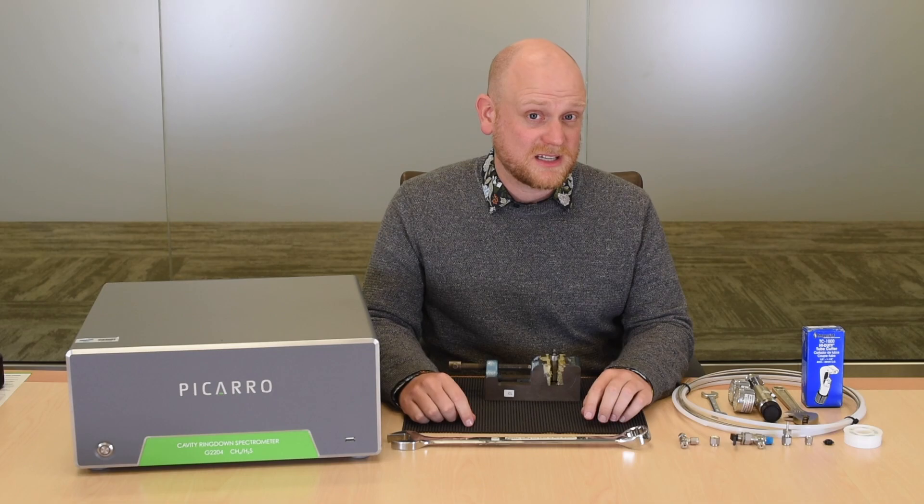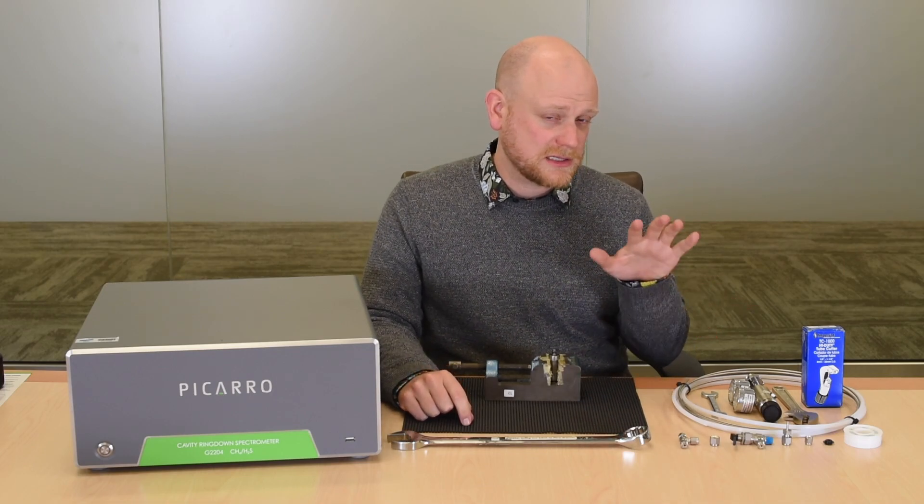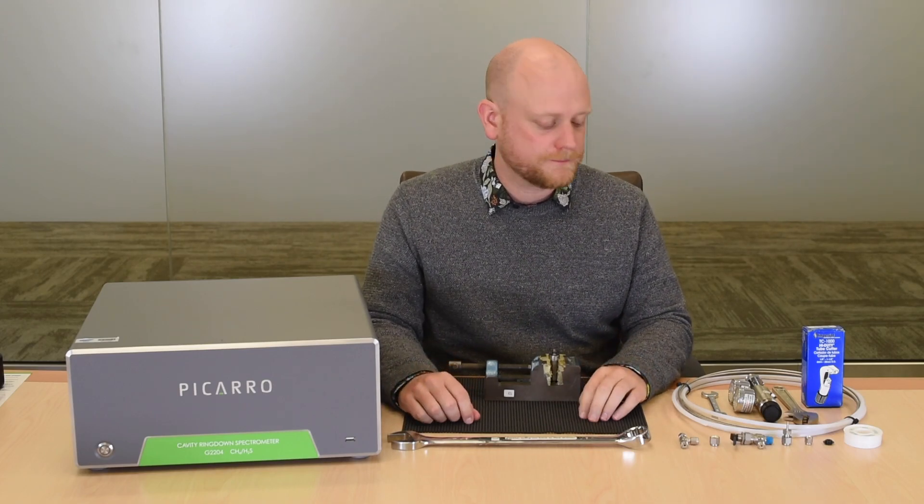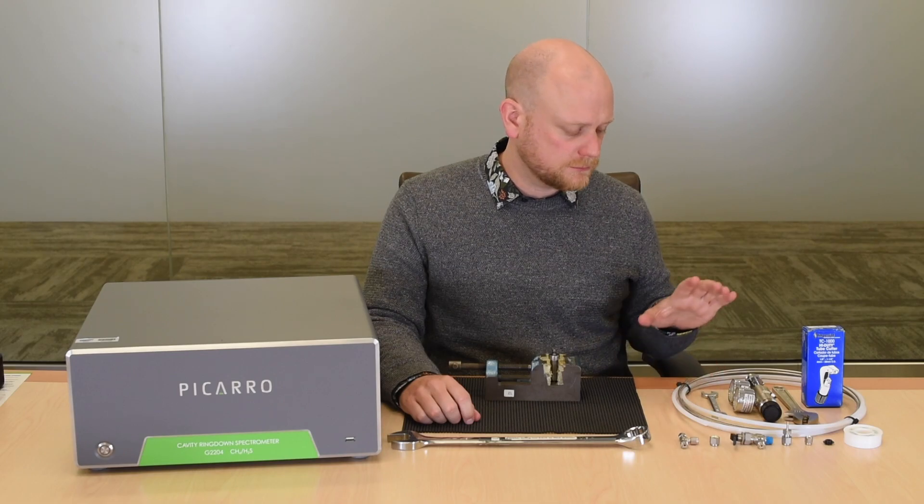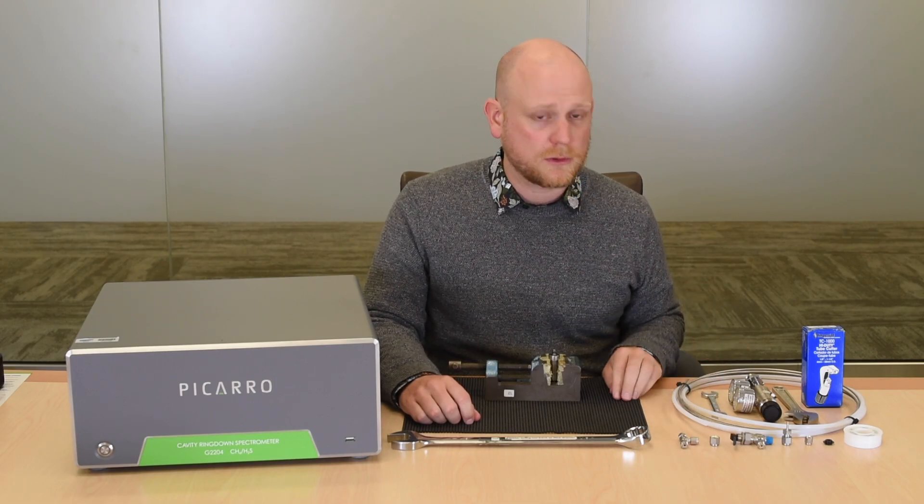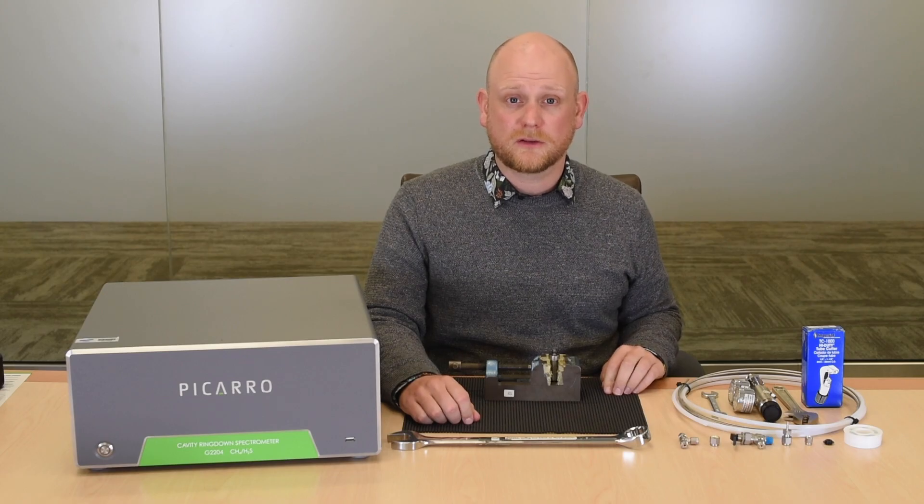I'm going to start by discussing the contents of the dry gas kit. Purchasing this from us will simplify the process of procuring all of the components. The first element is the tubing. In this bundle here, we have eighth inch stainless steel and quarter inch teflon, which can be used in some systems. I'm going to talk just about the eighth inch stainless steel tubing.